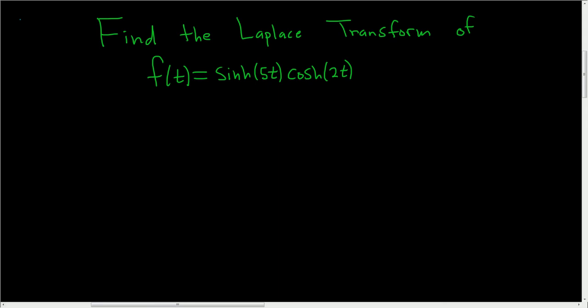We're being asked to find the Laplace transform of the sinh of 5t times the cosh of 2t. Let's go ahead and work this out. So I don't know a formula that we can use to do this. I'm sure there is one, but I don't know it.